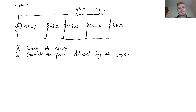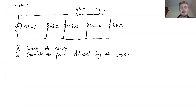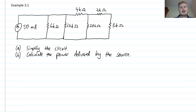I'm going to do an example — example 3.1 from the textbook. They've given us a particular circuit. Part A says simplify the circuit, and part B says calculate the power delivered by the source. What I'm going to do is combine this whole network of resistors into a single resistor so that I have a really simple circuit that's easy to analyze.